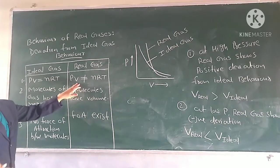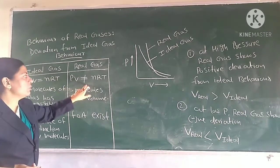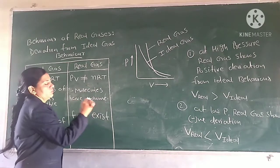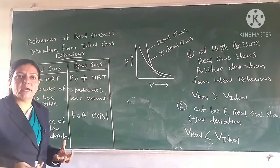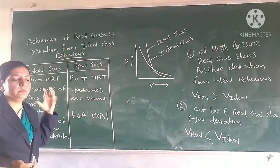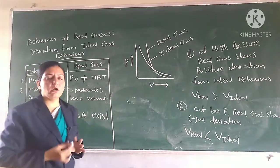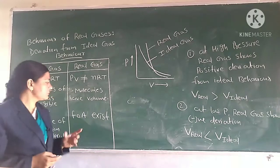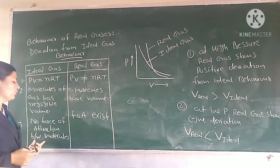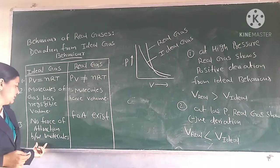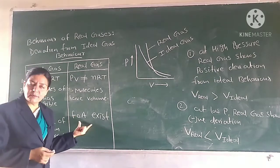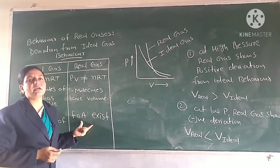Then we talk about real gases. In real gases, PV is not equal to NRT. The molecule has volume. When there is volume in real gases, you all know. And for ideal gases, the volume of the molecules present is negligible. The third thing: the force of attraction is negligible in ideal gases. But in real gases, the force of attraction exists.